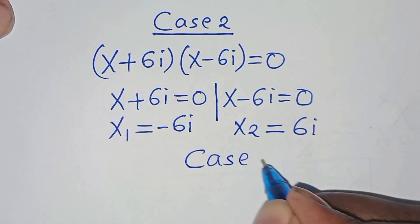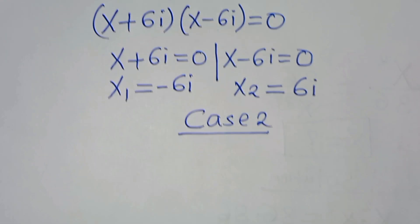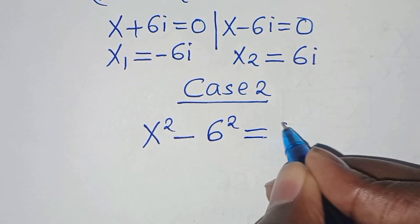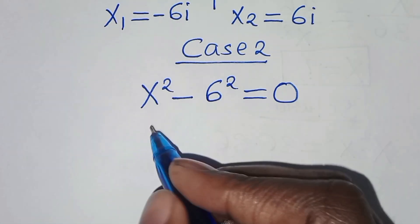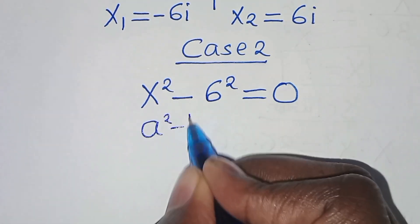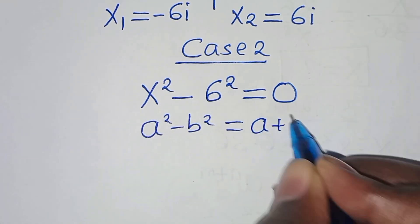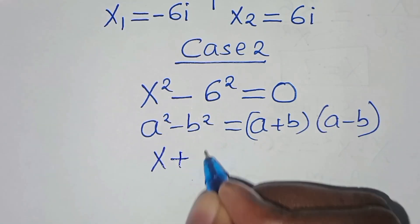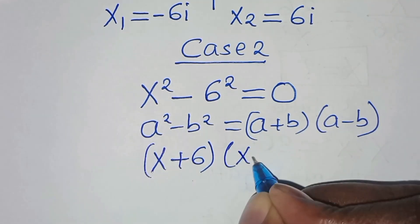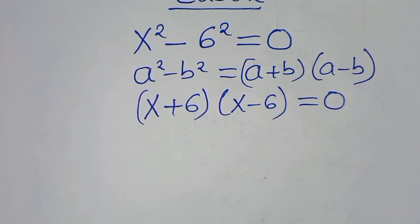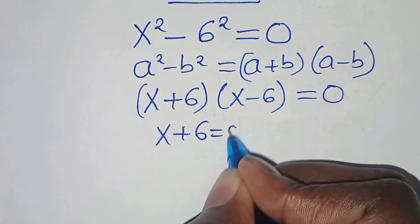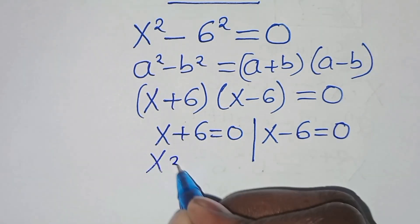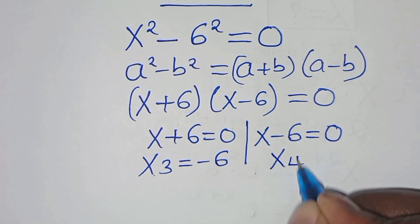For Case 2: x squared minus 6 squared equals 0. This is the difference of two squares, which factors as (x plus 6)(x minus 6) equals 0. We have two parts: x plus 6 equals 0, giving x₃ equals minus 6, and x minus 6 equals 0, giving x₄ equals 6.